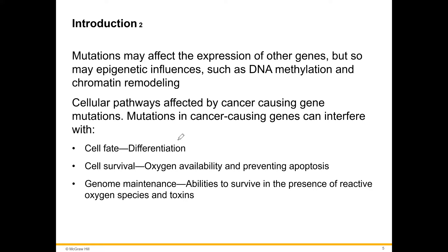Most differentiated cells — like muscle cells and nerve cells — don't divide. Some differentiated cells, like fibroblasts, have a limited number of divisions. But when we have mutations in the genes, differentiated cells might continue dividing and form tumors.